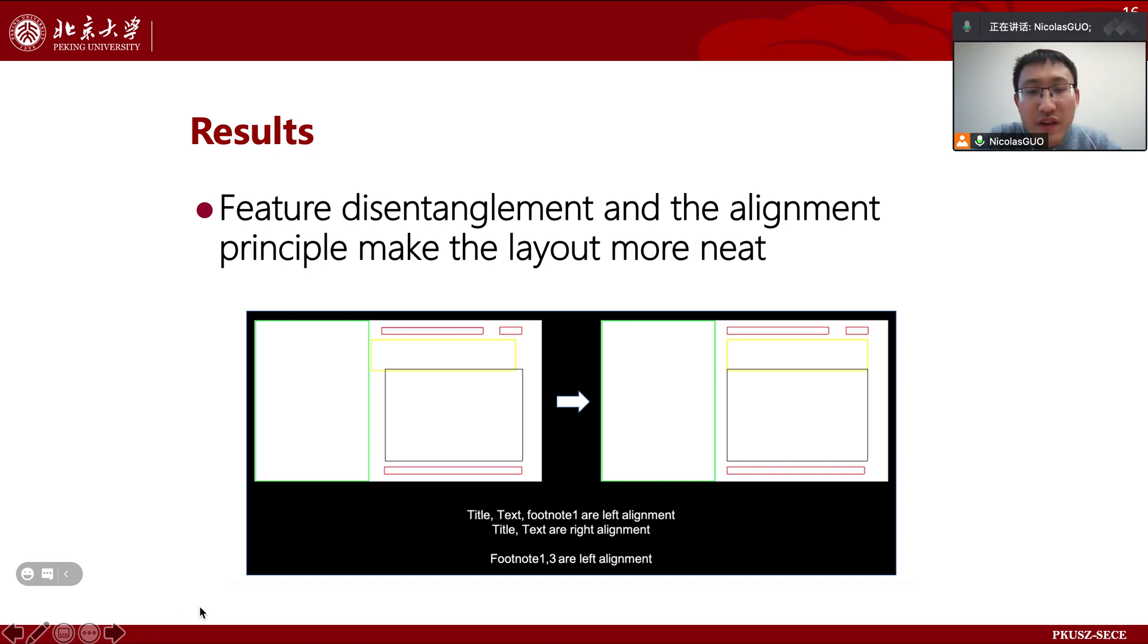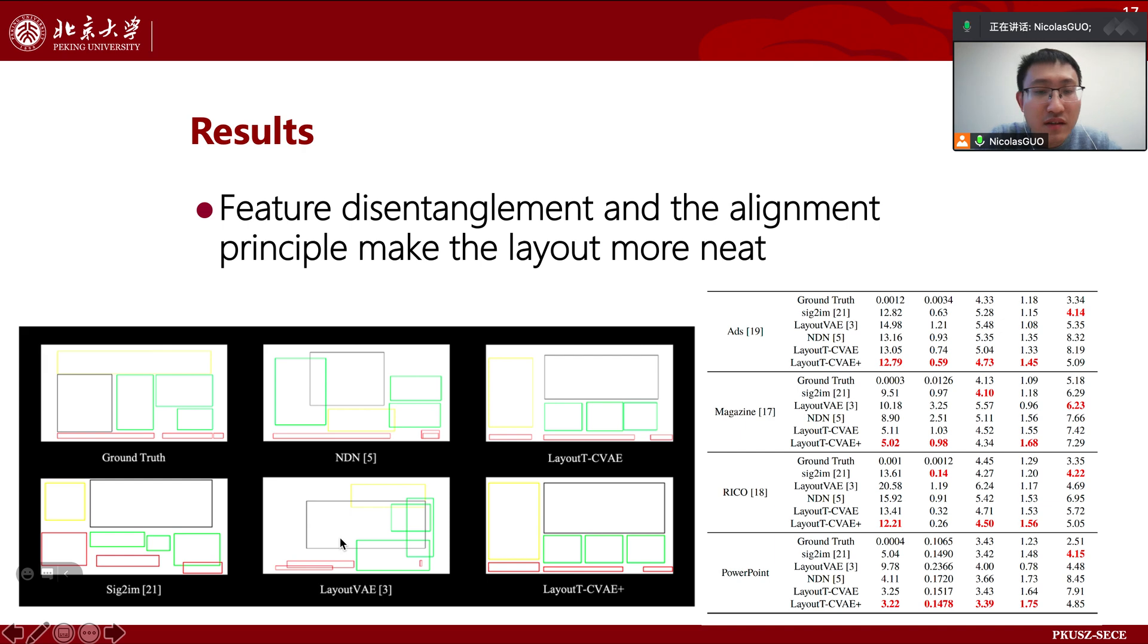And the feature disentanglement and the alignment principle makes the layout more neat. From the figure, we can see that by introducing an alignment strategy, the title represented by the yellow box is clearly aligned with the text represented by the black box. Compared with other methods, our method is obviously better in both qualitative and quantitative aspects.